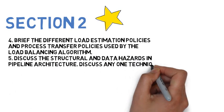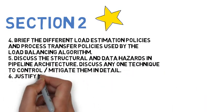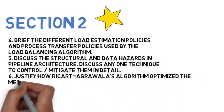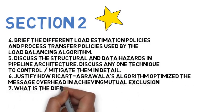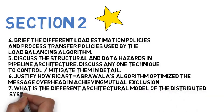Next is justify how Ricart-Agrawala's algorithm optimizes the message overhead in achieving mutual exclusion. Next particular question is what are the different architectural models of the distributed system, explain this with a neat diagram.